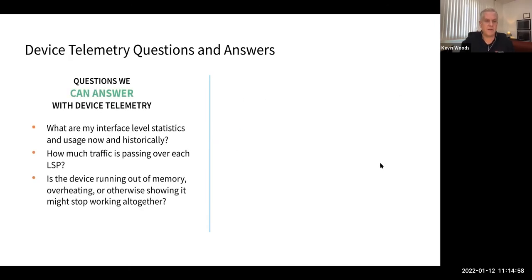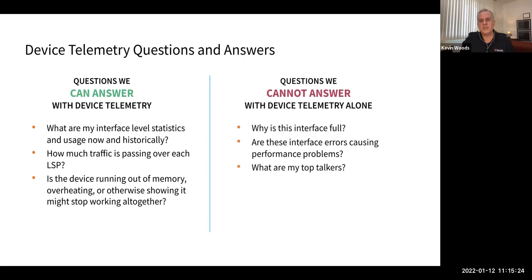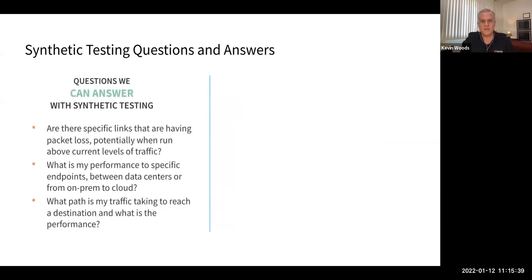Another example is device telemetry — a very important part of network observability. With device telemetry, I can answer: what are my interface-level statistics now and historically? How much traffic is passing over each LSP? Is the device running out of memory or overheating? But I cannot answer: why is the interface full? Are interface errors causing performance problems? Or who are my top talkers on the network? We need other telemetry information to answer those questions.